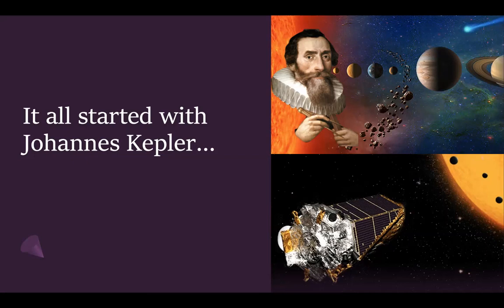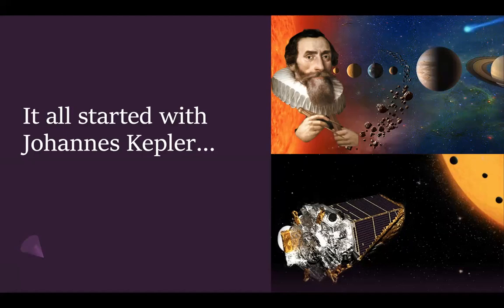The Kepler mission lasted for about nine years, and during that time more than 500,000 stars were observed. Scientists found 2,662 exoplanets — quite a large number that we now know exist outside our solar system. After Kepler, another ongoing mission called TESS has found additional exoplanets, and others have been found through different methods as well.